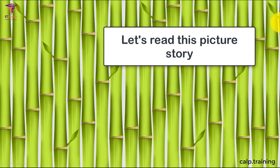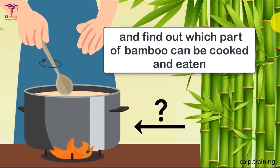Let's read this picture story. We will read this story so that you can know that a dish can also be made of bamboo, and find out which part of bamboo can be cooked and eaten.